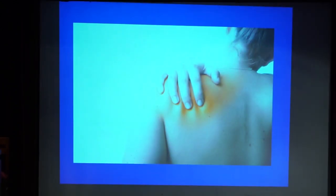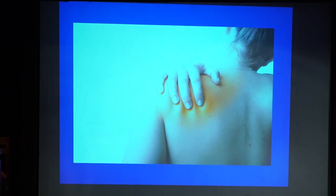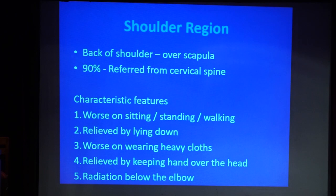When considering upper limb pain, if we take the shoulder region, the patient might complain of pain in the back of the shoulder or scapula, over the deltoid, the top of the shoulder, the anterior shoulder, or the root of the neck. Coming to the elbow, they might complain of pain on the lateral, medial, or posterior side. Each location gives us a clue to the diagnosis. The same applies to the wrist and palms.